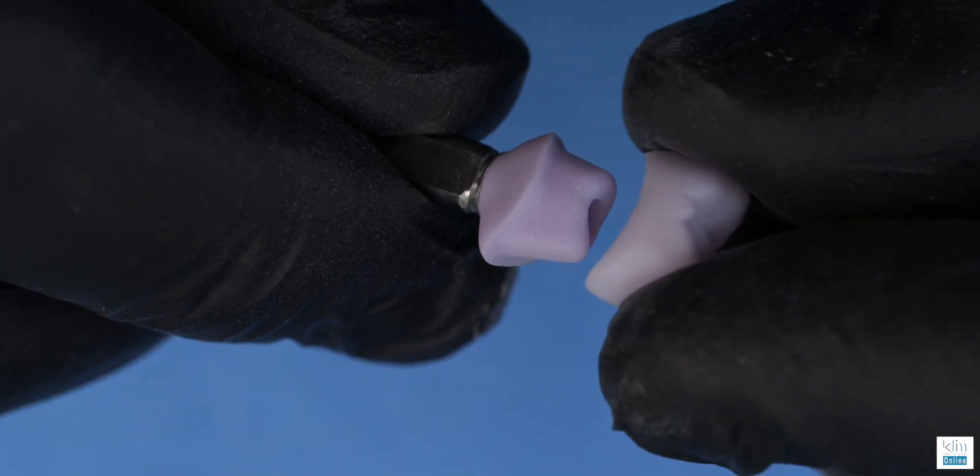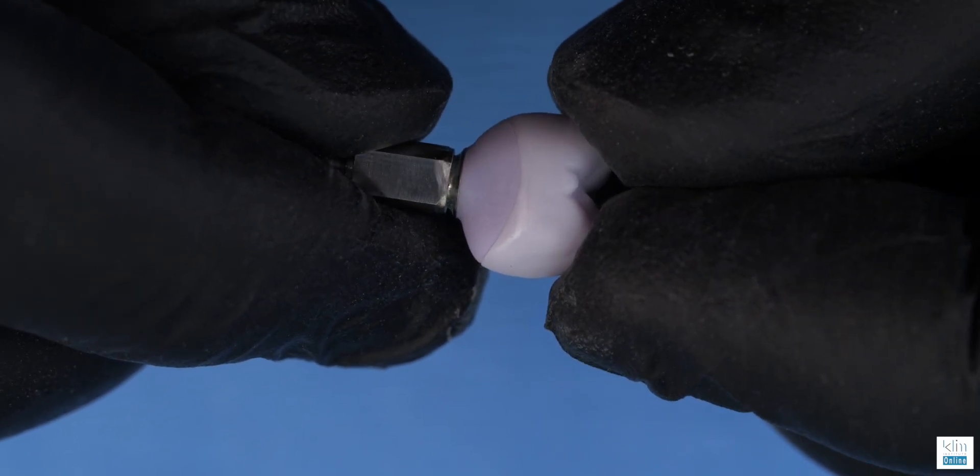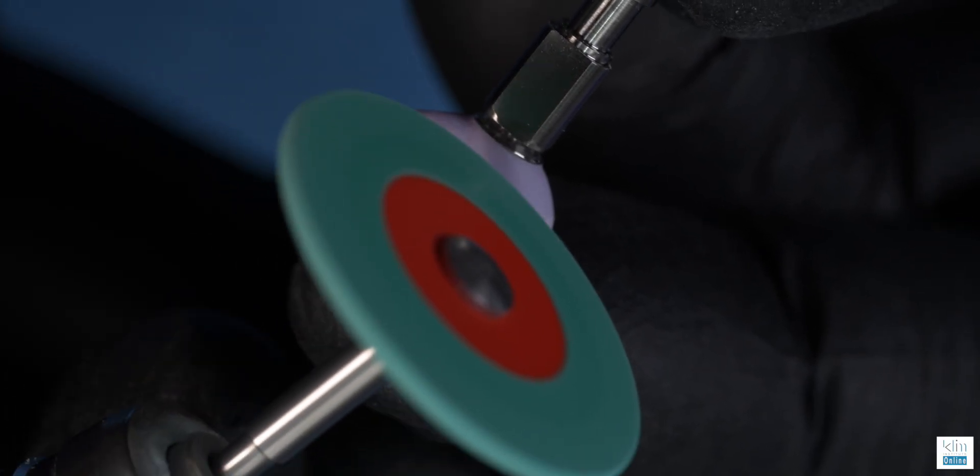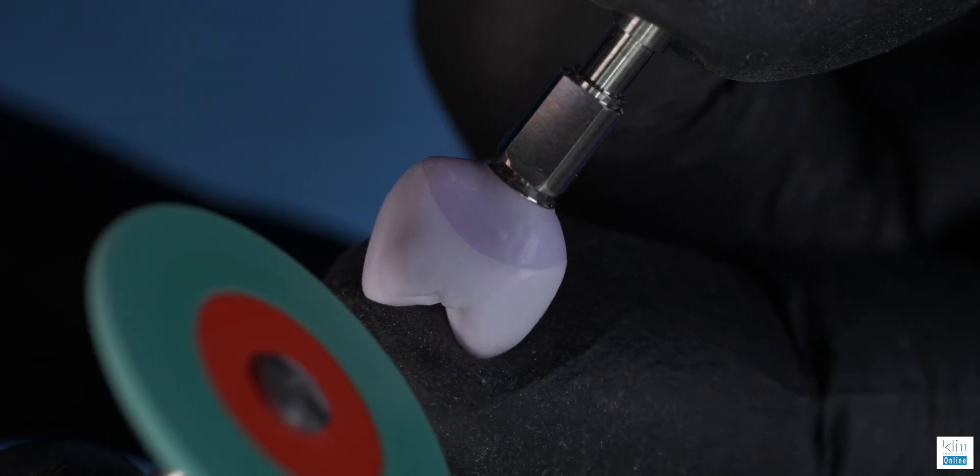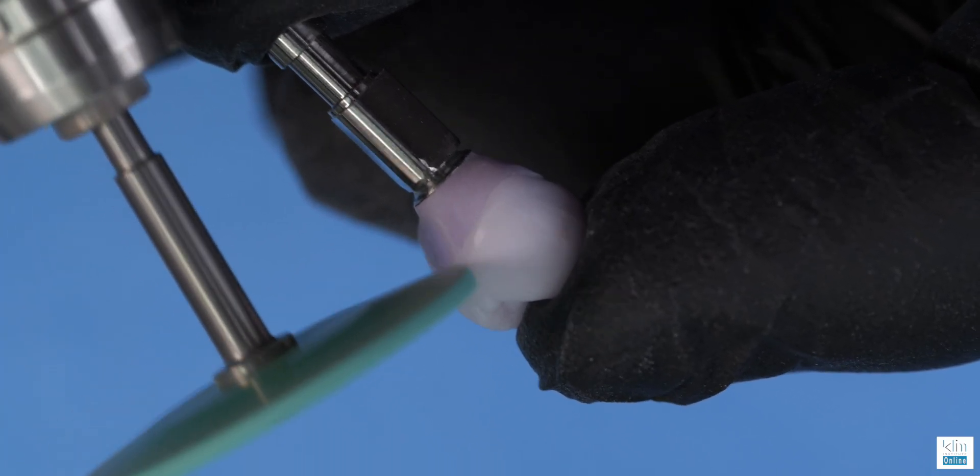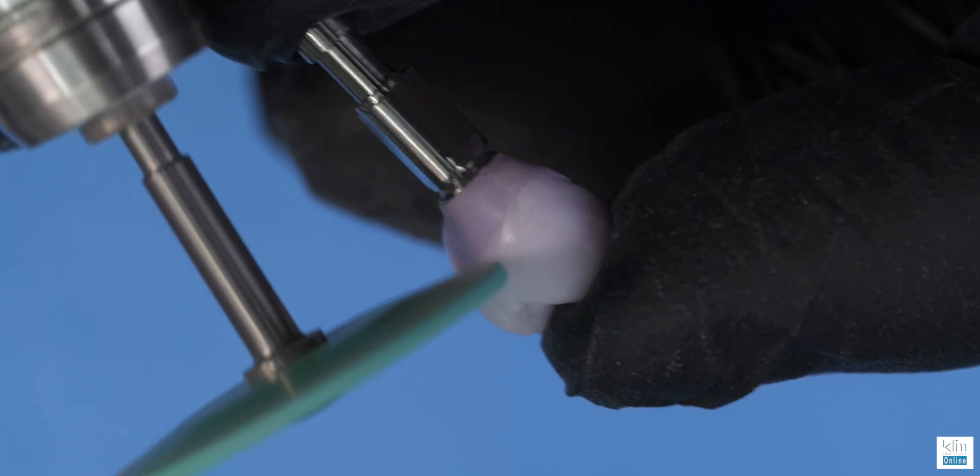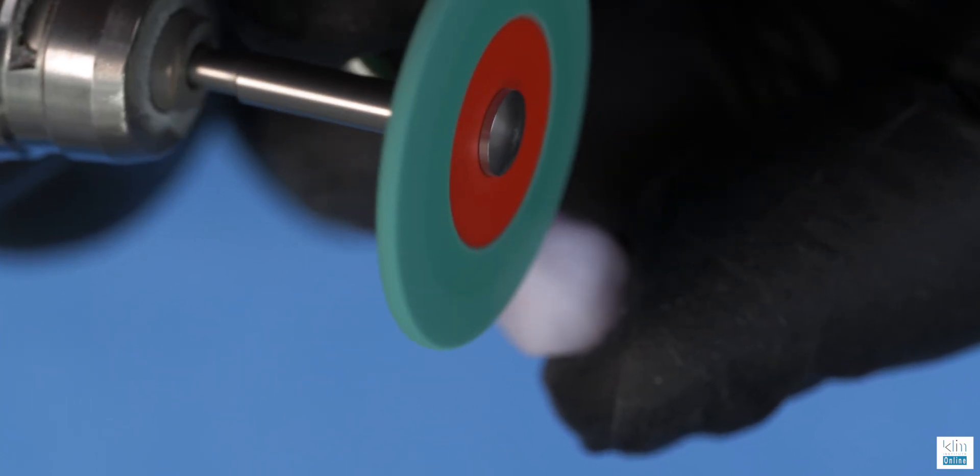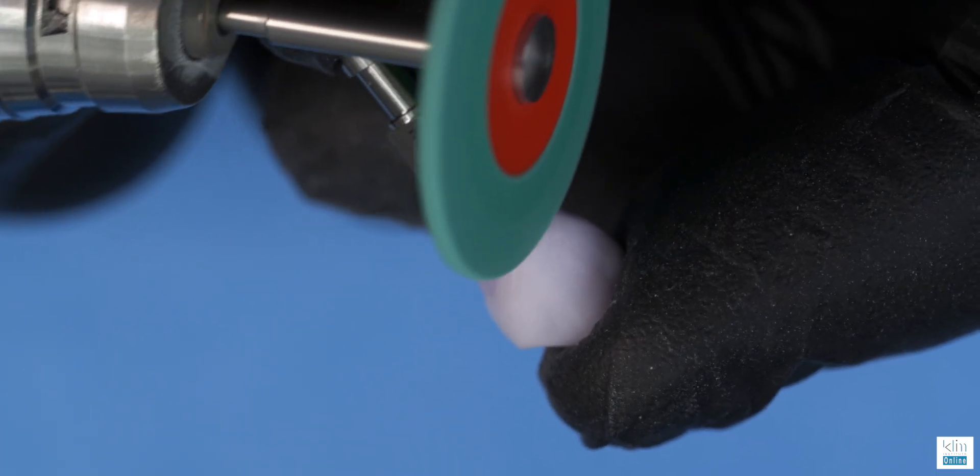With the extra fine mill for Emacs, you can see those margins are nice and tight. We're wanting to verify them in the fit. Take the green coarse wheel, holding that crown tightly onto the abutment and polish that junction. And that will create a glass smooth transition from the abutment to the restoration.